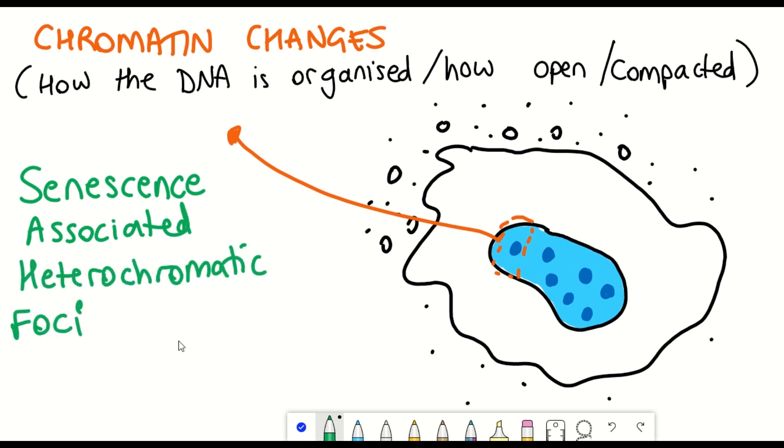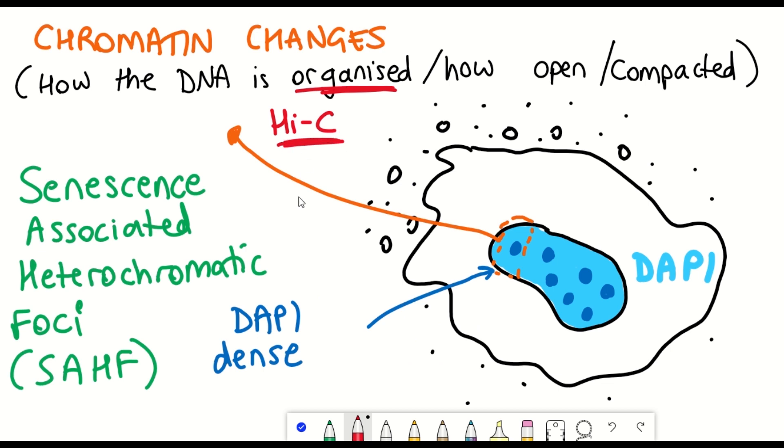Interestingly, in some senescent cells, in particular oncogenic induced senescence, are the observation of these heterochromatic foci referred to as senescence associated heterochromatic foci, otherwise known as SAHF. And these can be visualized as DAPI dense regions in the nucleus. And so DAPI is what's used to stain DNA.